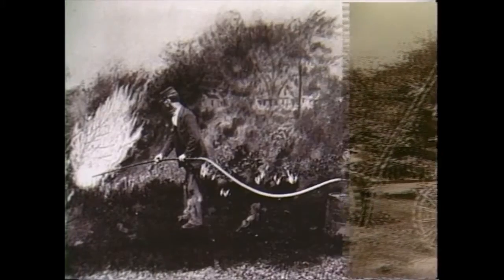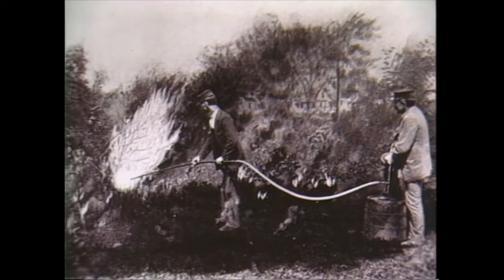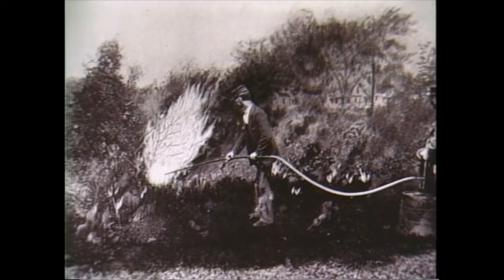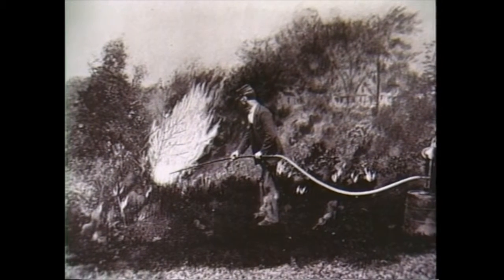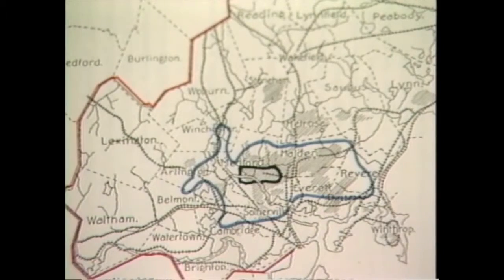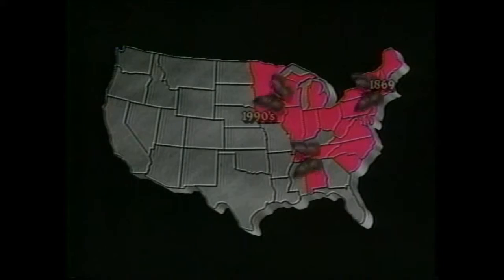By 1900, the large outbreaks had subsided and the Massachusetts legislature stopped eradication efforts. However, by 1912, the moth had expanded its range to include four neighboring states. The federal government got involved in 1906 and has been ever since — nevertheless, the pest spread from state to state over the next hundred years.